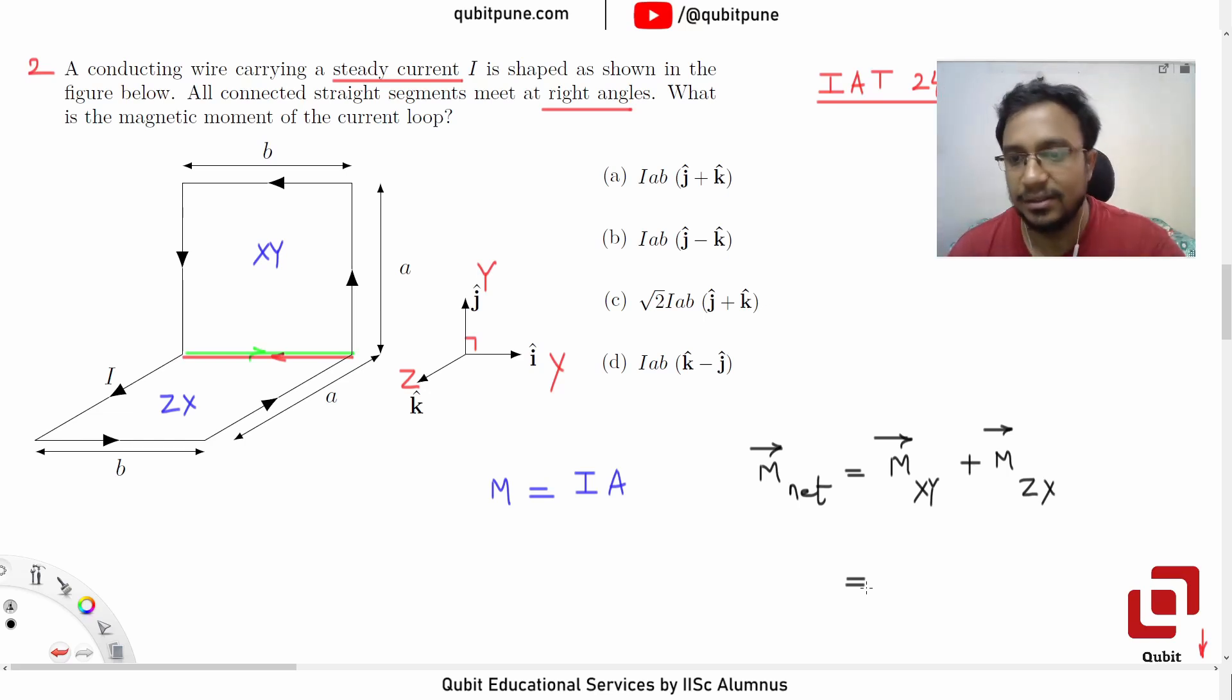So how will we determine that M bar X-Y? Current is steady, so we can take that I. Area is I*A*B.